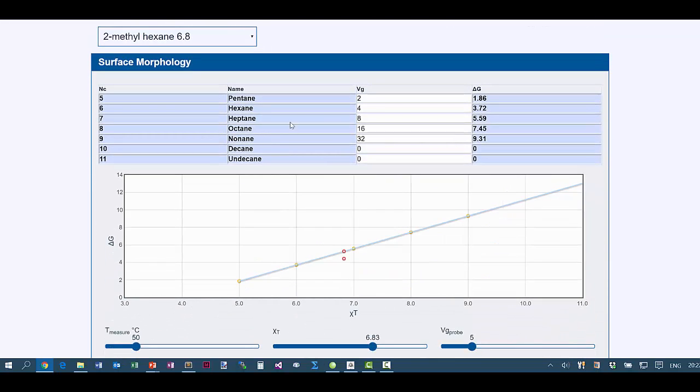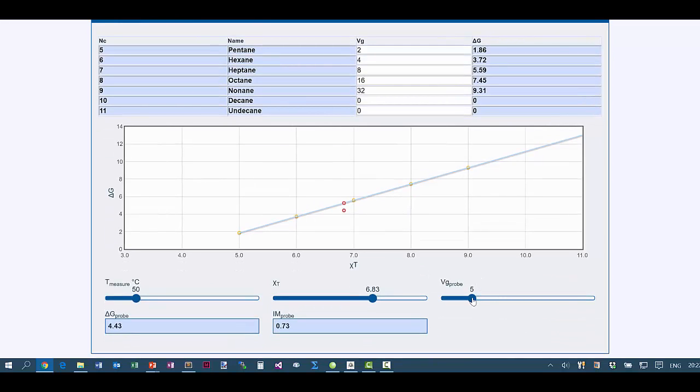You have the standard set of experiments with the same data as in the previous slide. The topology index is 6.8, so suppose the Vg of the probe was 4.3.